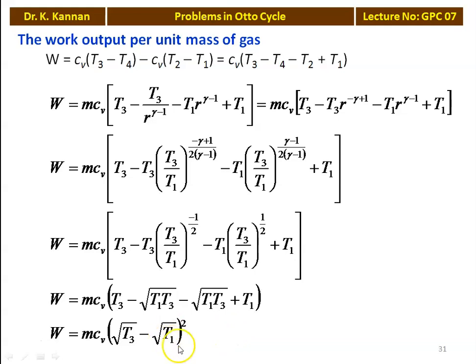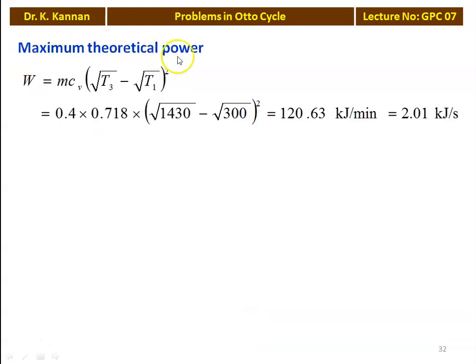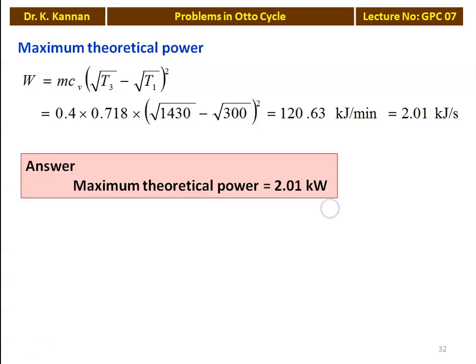Using this equation, the maximum theoretical power = mCv·(√T3 − √T1)². With T3 = 1430 K, T1 = 300 K, and mass = 0.4 kg/min: the result is 120.63 kJ/min = 2.01 kJ/s = 2.01 kW. The maximum theoretical power is 2.01 kW. Key formulas to remember: T2 = T4 = √(T1·T3), and maximum work = mCv·(√T3 − √T1)².